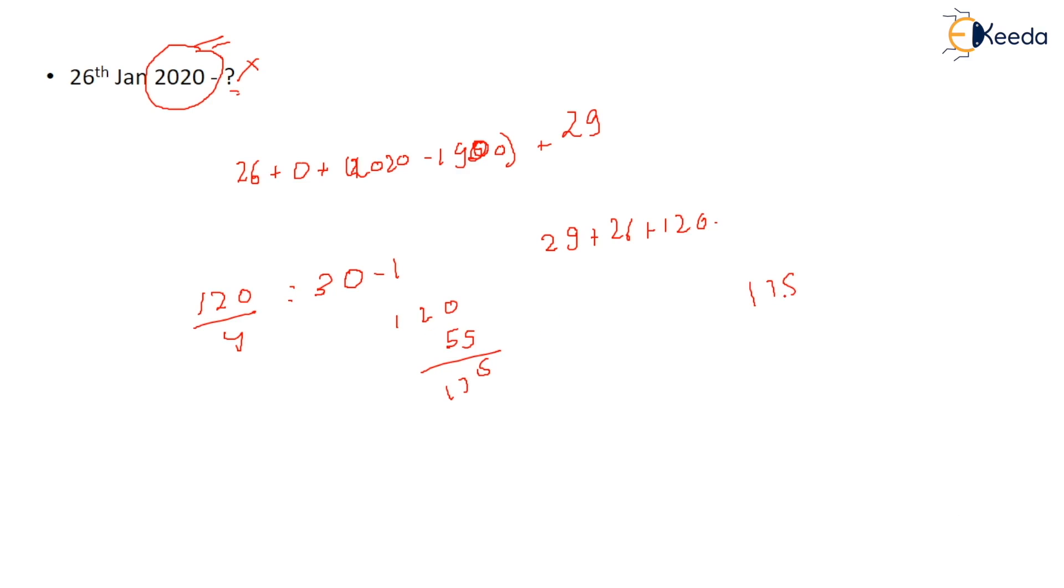You have to divide by 7: 14, 35. 35 is divisible by 7, comes out to be 0. 0 is code for what? Sunday.